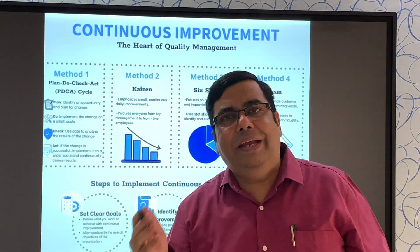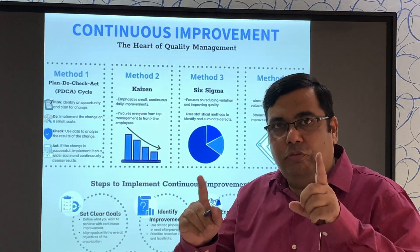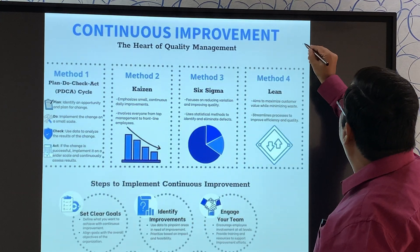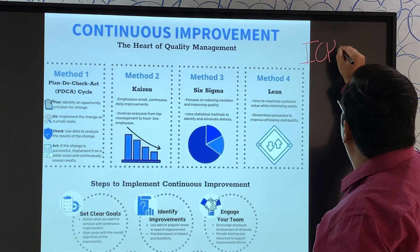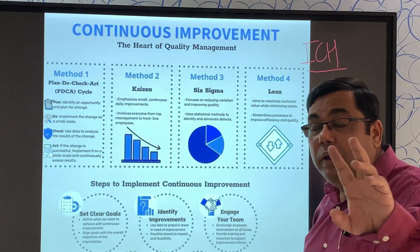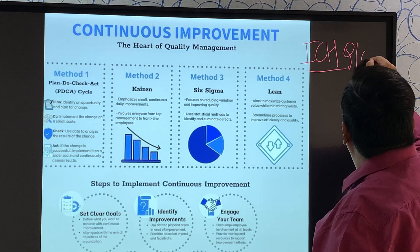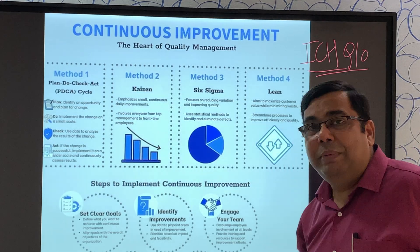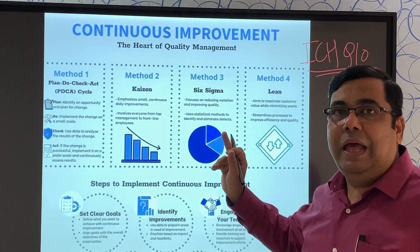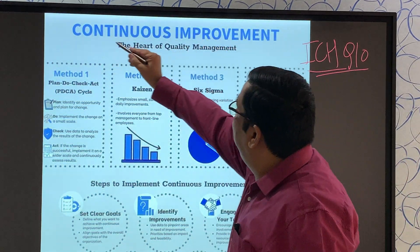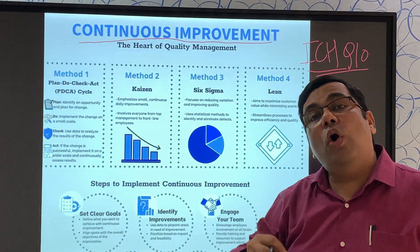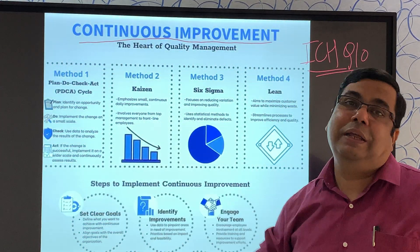Now you will ask me why it is required. My dear friends, remember you have a harmonized guideline that is the ICH. Hope everyone is aware about the ICH guideline — ICH Q10, Pharmaceutical Quality Management System, PQS. As per that guideline, continuous improvement is very very important, and many companies even do not have an SOP for continuous improvement.